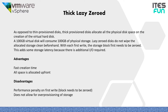Now we have thick lazy zeroed, the first type of thick provisioning. As opposed to thin provision disks, thick provision disks allocate all the physical disk space at the time of virtual hard disk creation. A 100 GB virtual hard disk will consume 100 GB of physical storage and does not wipe the allocated storage clean beforehand. With each first write, the storage block first needs to be zeroed, which adds some storage latency due to the additional I/O required. The advantages are fastest creation time among thick types and all the space is allocated up front. The disadvantage is a performance penalty on first write since the block needs to be zeroed, and it does not allow for over-provisioning of storage.